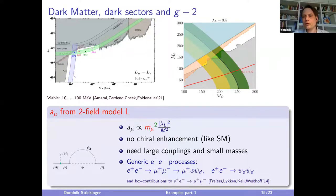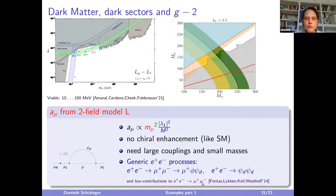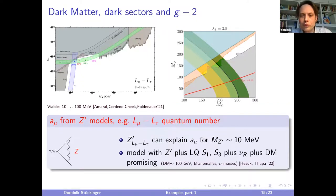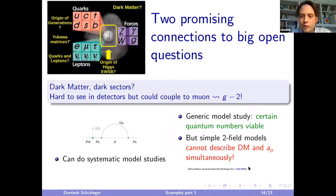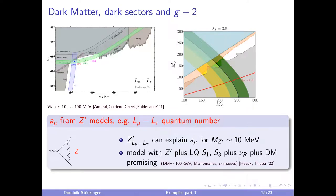If the new particles also couple to the electron — not just the muon — one also gets one-loop corrections from box diagrams to processes like e+e- → μ+μ-, and by measuring these processes precisely one could be sensitive to these new physics box contributions and constrain the new physics scenario.